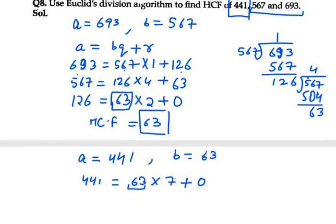So 63 is the HCF of all three numbers. Whatever HCF we get after these two steps, that will be your HCF for all three numbers. So the answer is 63.